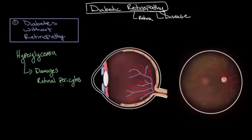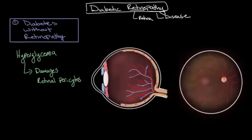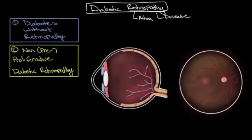This damage to the retinal pericytes is the earliest stage of diabetic retinopathy, and it's likely present in many, if not most, individuals who have had diabetes for at least a few years. Unfortunately, this damage is only detectable under a microscope, and therefore the retina on an ophthalmologic exam looks normal. So early in the course of diabetes, individuals will not necessarily have visual disturbances or signs of disease on exam. However, this does not mean that the damage is not occurring — it's just not detectable.